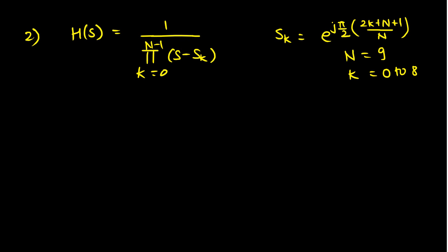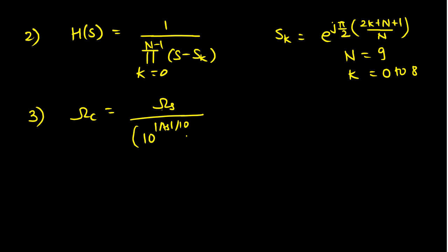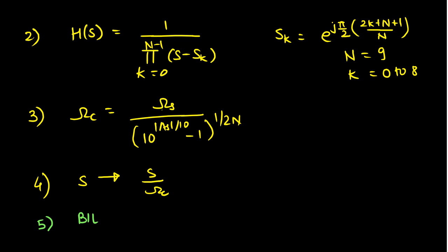Once we have the order N equal to 9 with K varying from 0 to 8, we find H(S) equal to 1 divided by the product over K from 0 to N-1 of (S minus S_K), where S_K equals e^(j*pi*(2K + N + 1) / N). This gives the normalized low pass filter. We then find the cutoff frequency, substitute S as S/omega_C into the transfer function, obtaining the required analog low pass filter.